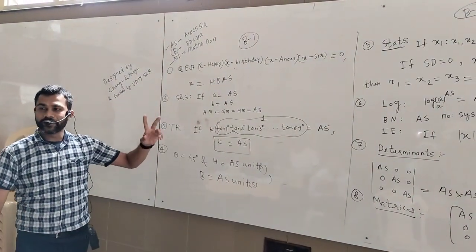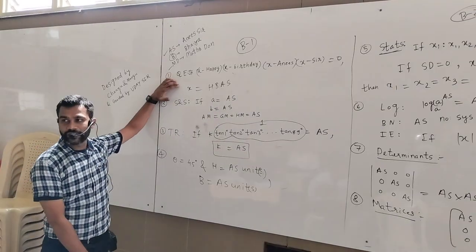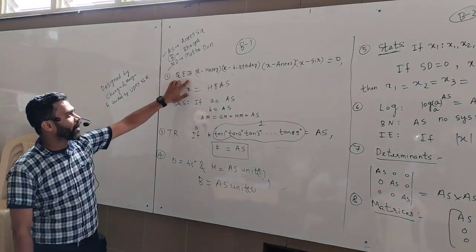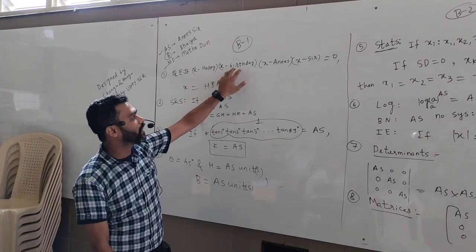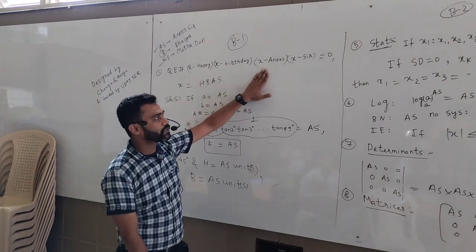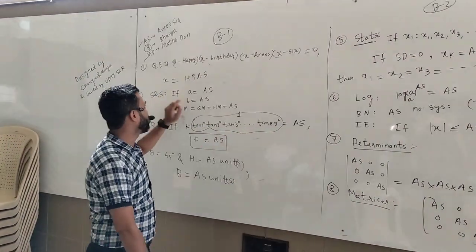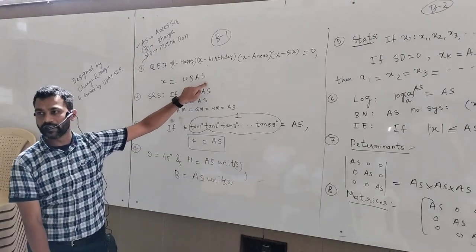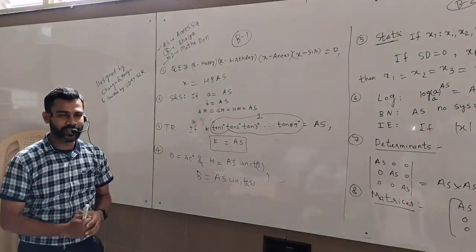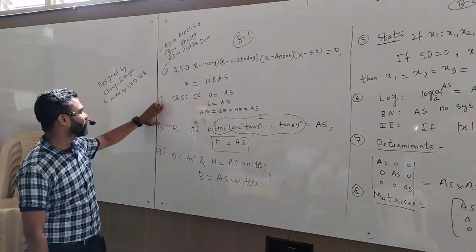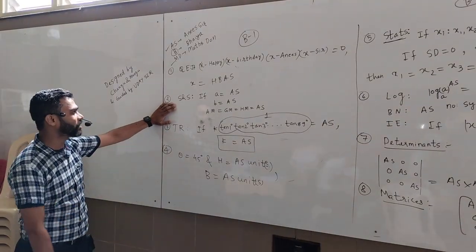Book number one, chapter number one: quadratic equation. If (x - Anisar)(x - birthday)(x - Anisar)(x - Sir) is equal to zero, then x is equal to Anisar, birthday, Anisar, Sir. Wish you a many many happy returns of the day, Sir. Now the second one is sequence and series, the second chapter.